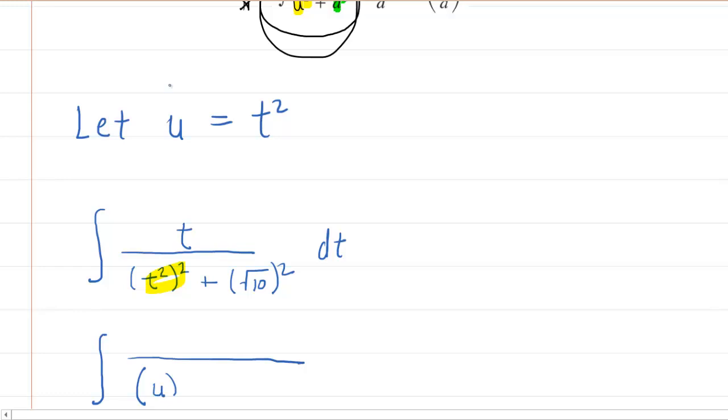The reason that's going to work is because then in the denominator where we have this t squared in the parentheses, we can replace that t squared with u. So this actually becomes u squared plus radical 10 squared. It begins to take on the form that we wanted where we have the variable squared plus the constant squared. But we've got to get rid of this variable in the numerator.